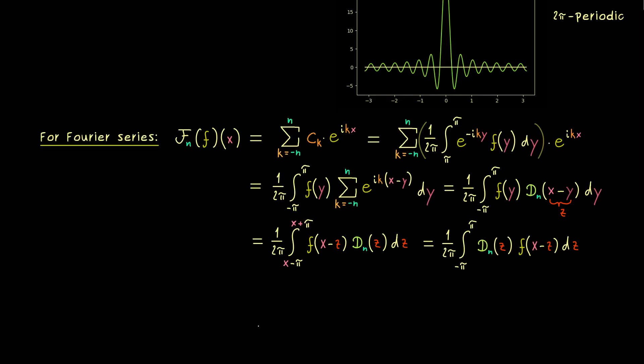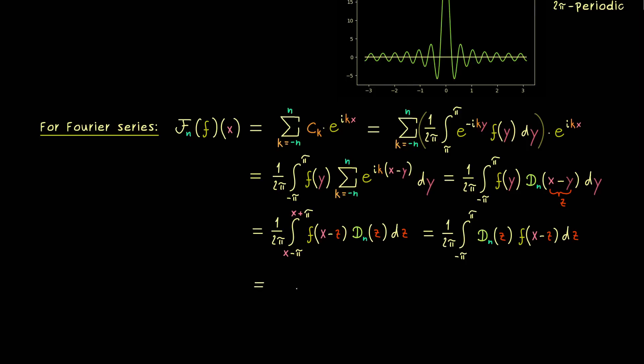And indeed if we want, we can also change the order and write D_n times f of x minus z. And there we see that we can also equivalently write the whole thing as an inner product. So it's our L2 inner product with D_n in the first component and the shifted function f in the second component. And this one we can write as f of x minus dot, because only the variable x is fixed. This formulation is already very helpful, but on the other hand, you could also write it as a convolution, if you know what that means. Indeed the convolution is not complicated at all, it's just this integral all together. And then one would simply write D_n star f.